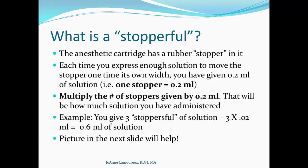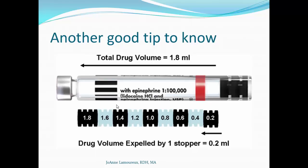That is basically one third of a cartridge — not one quarter, one third. This picture will help you. Each time you move the stopper that distance down, the first time generally ends up just below the line indicating the type of anesthetic. That would be 0.2 mL. Dividing the whole cartridge this way tells you exactly how much you have administered.